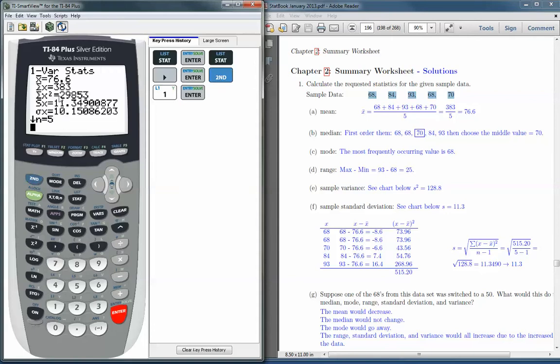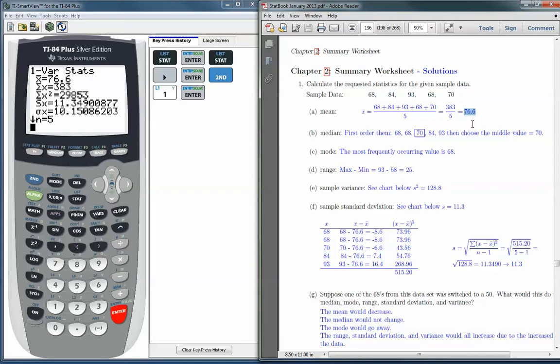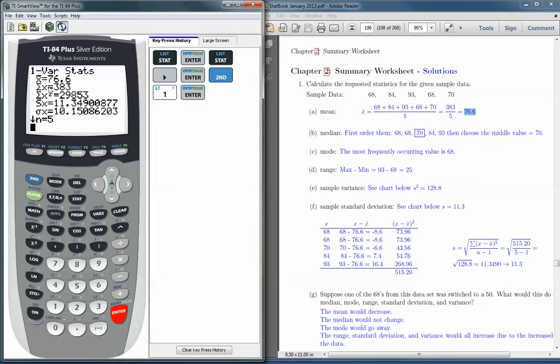And the first thing it gives, up here x-bar, is the mean, which is exactly what we calculated by hand, 76.6. It gives a couple of other things that we don't really use that much: the sum of all the values and the sum of all the squares of the values.